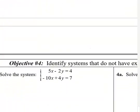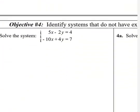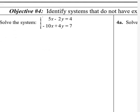The next objective covers weird situations. We said sometimes lines have one solution because they intersect once. But if they're parallel, there's no solution. And if they're actually the same line in disguise, there are infinitely many solutions.